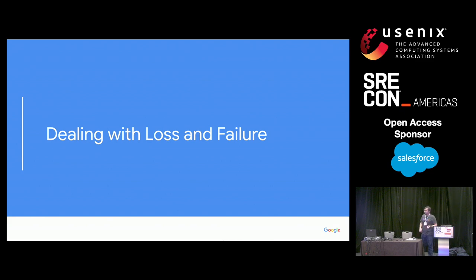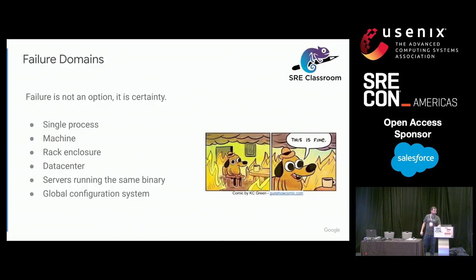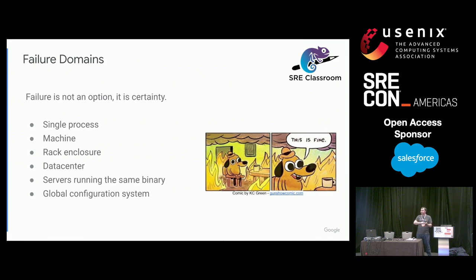How do we deal with failure inside distributed systems? Failure is not an option — it is a certainty. Things are going to fail: machines, disks, racks, top-of-rack switches, core switches, entire data centers. I've seen data centers just disappear and go offline. We want to build resilience into our system so that when these failures happen — not if, but when — we can continue to serve. Maybe we serve in a degraded state, but we continue.